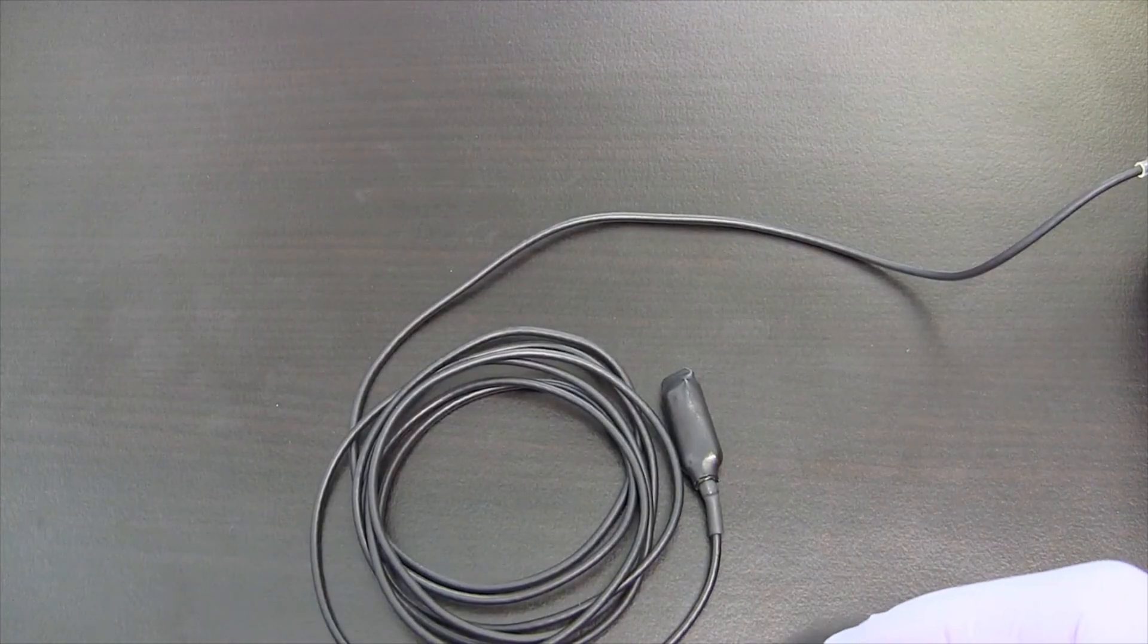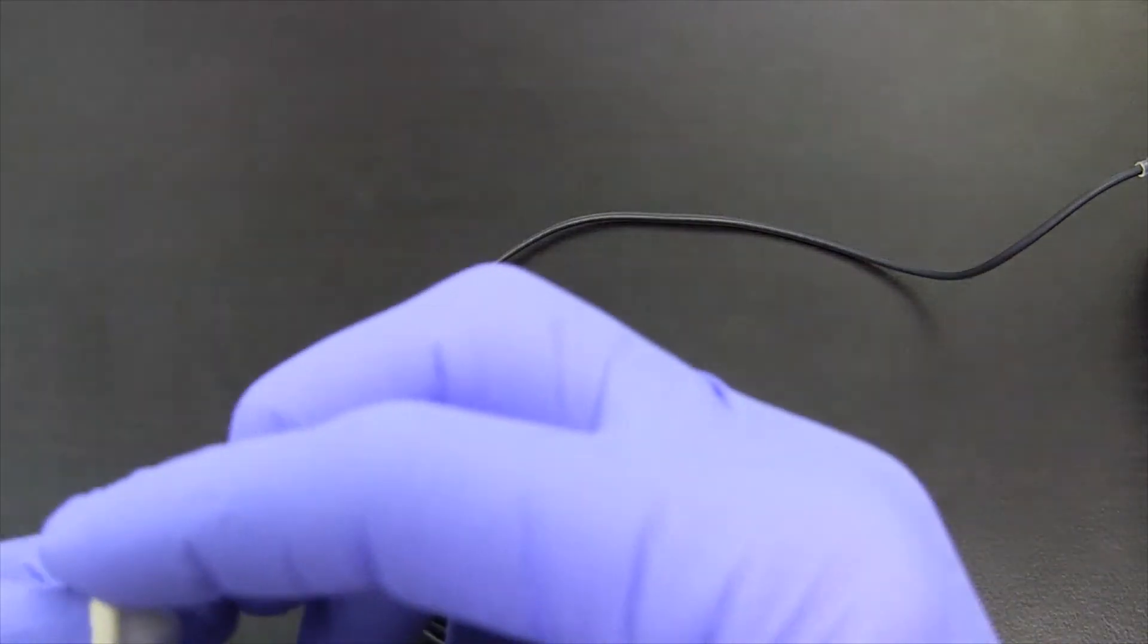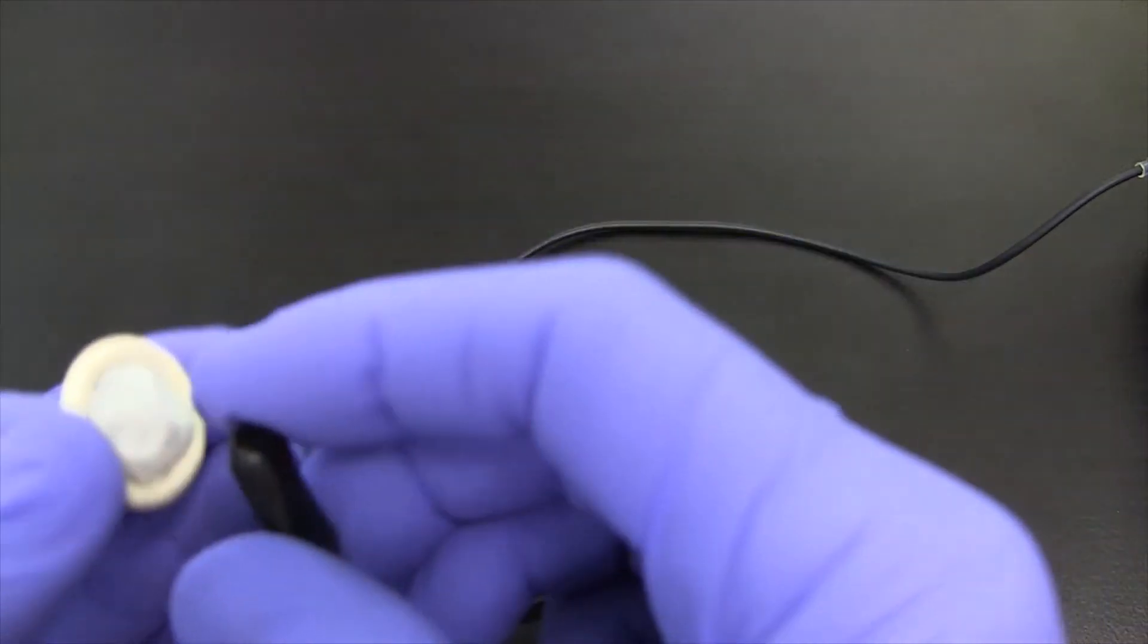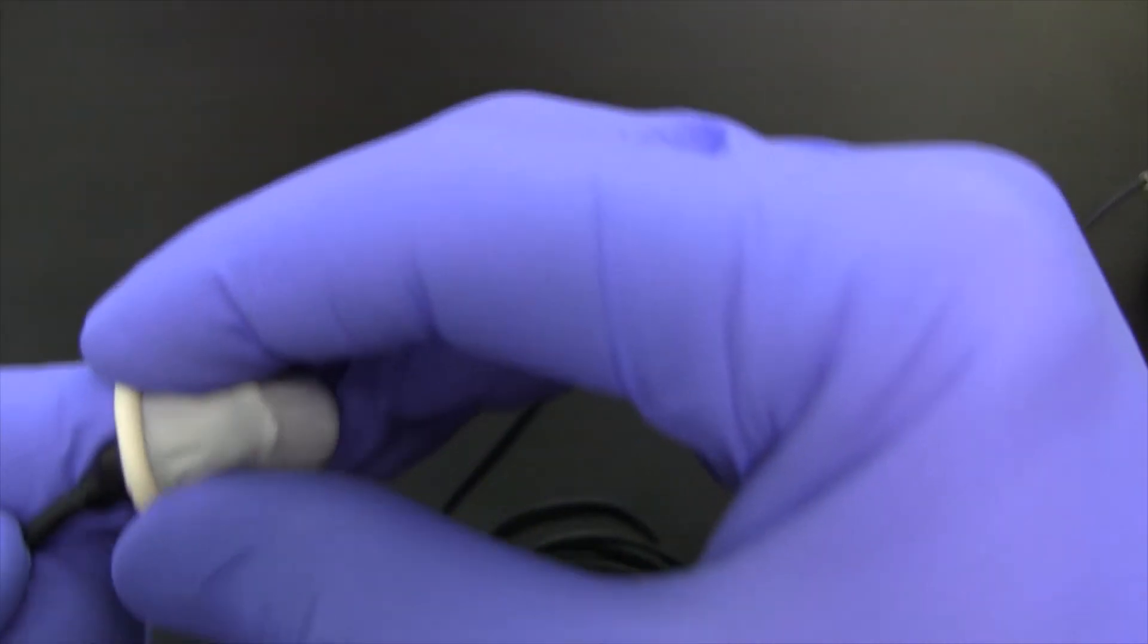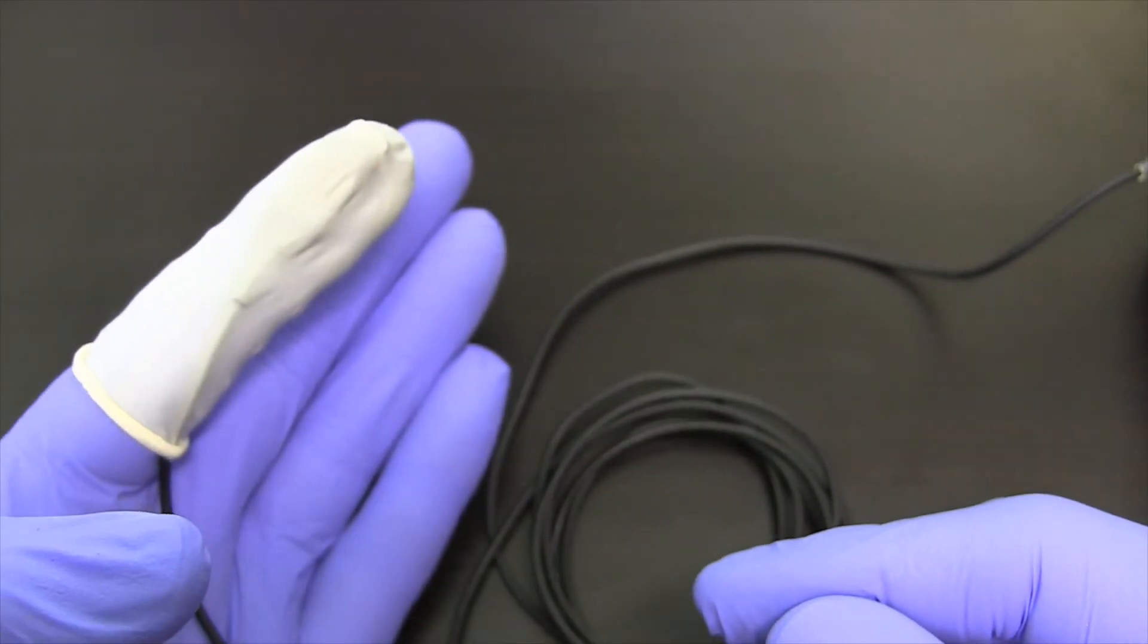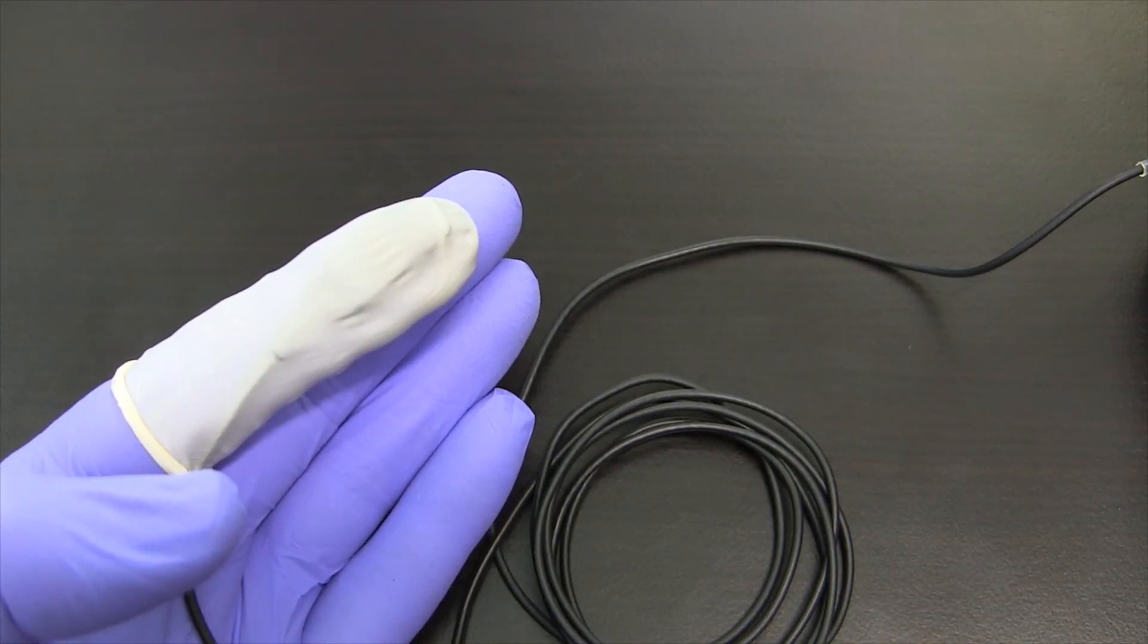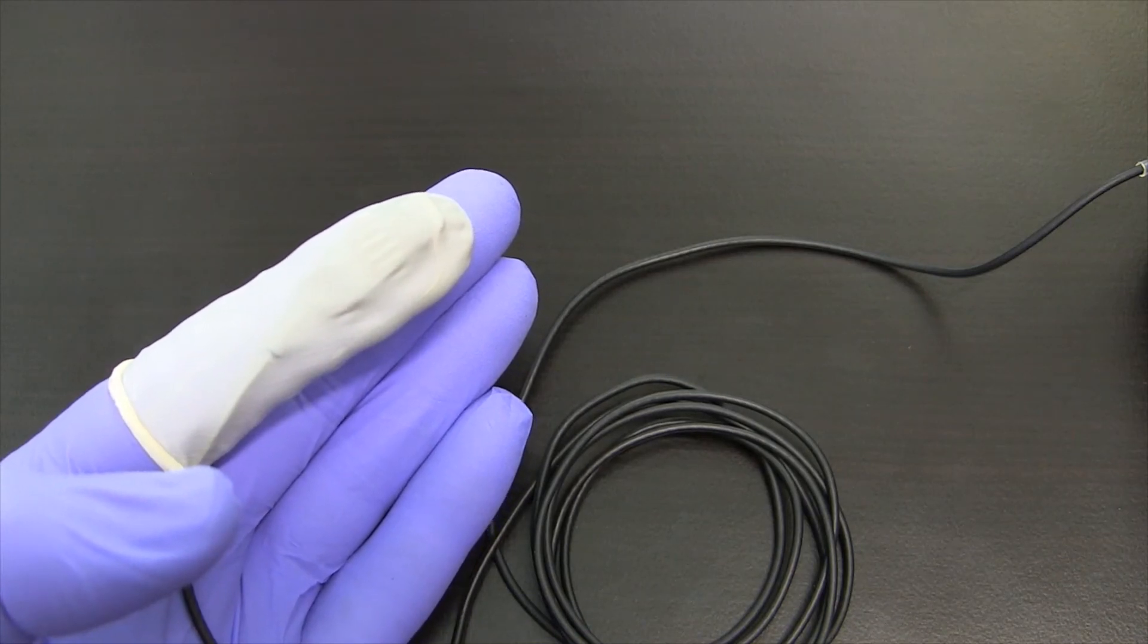There are several methods to mount the ED3 detector onto the fingers or extremities. One is the simple finger cot. By putting the detector on and then moving the finger cot over the finger, you can see how you can actually get the detector easily mounted. There are several other methods, such as using an elastic band. Some people will actually use surgical tape or other types of tape.